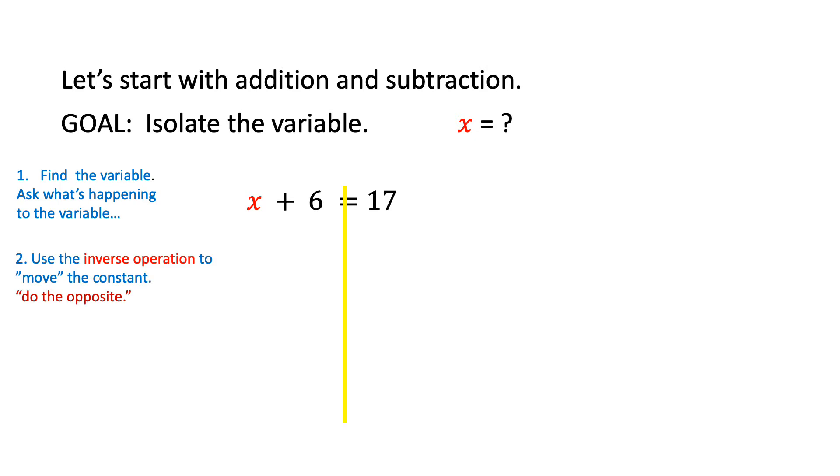To remove the 6, because we don't want 6 next to x, we need to do the opposite operation. The opposite of plus 6 is minus 6. Remember that whatever you do to one side of the equation, you have to do to the other side to keep the equation balanced. 6 minus 6 is 0, so these numbers cancel out, and we're left with x equals 11. We have isolated the variable.